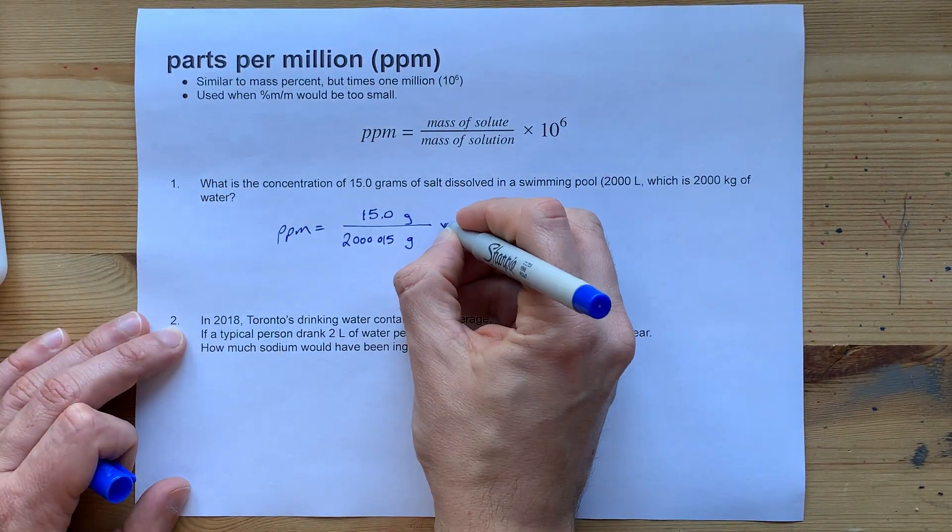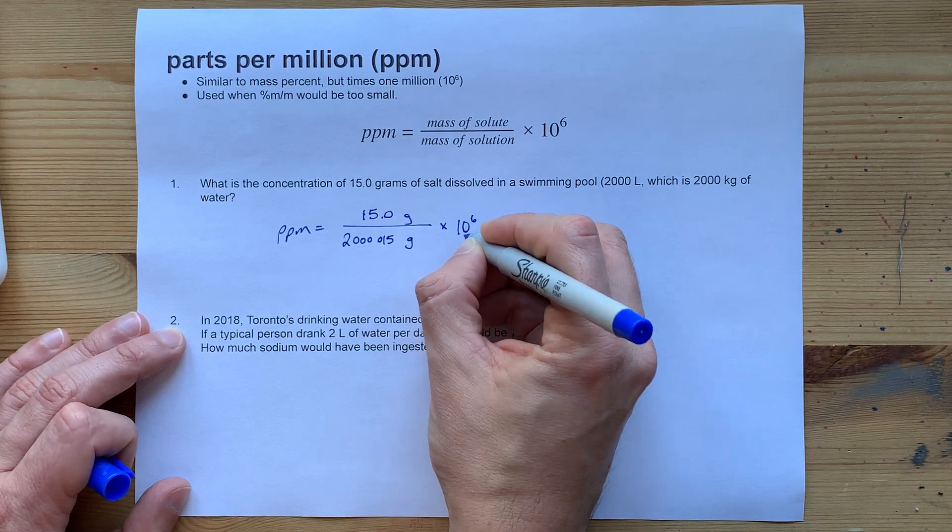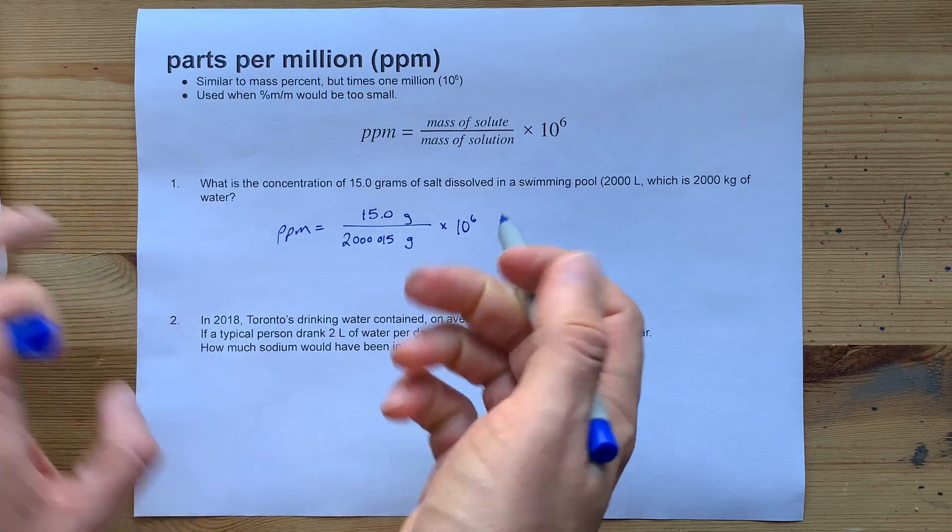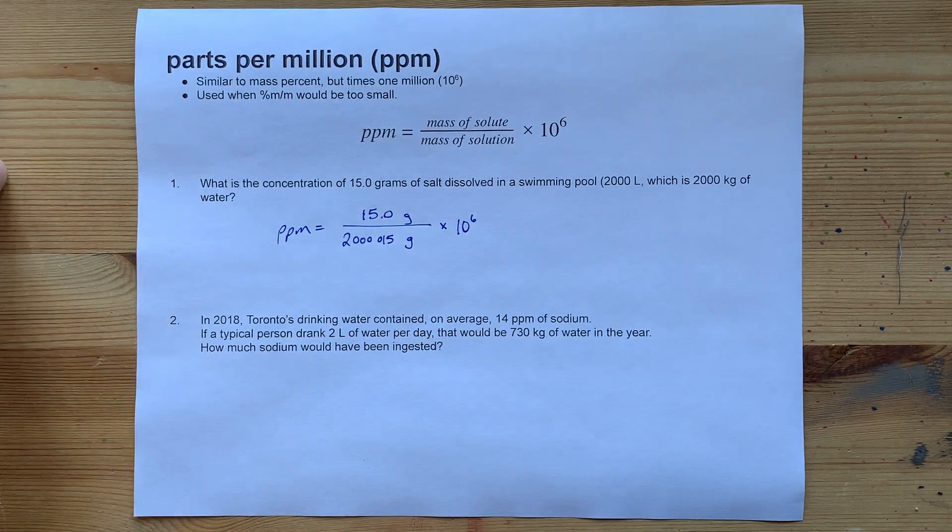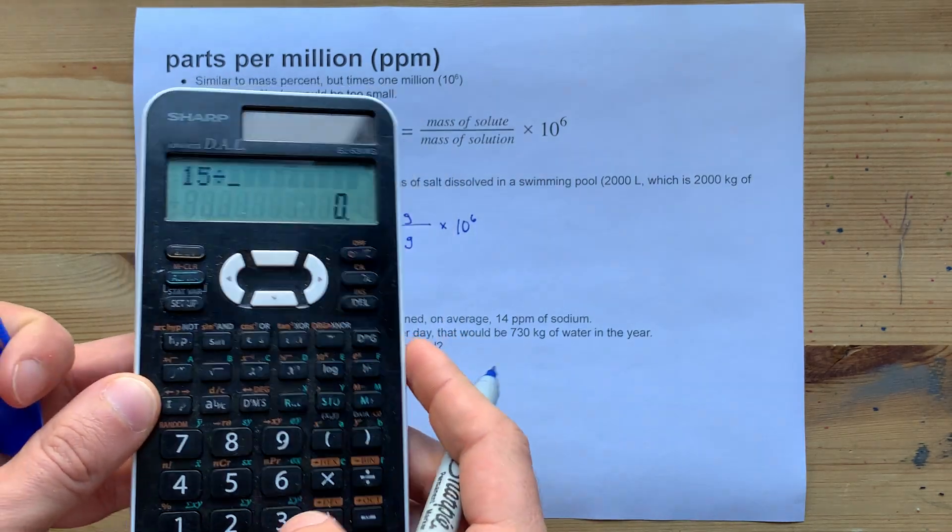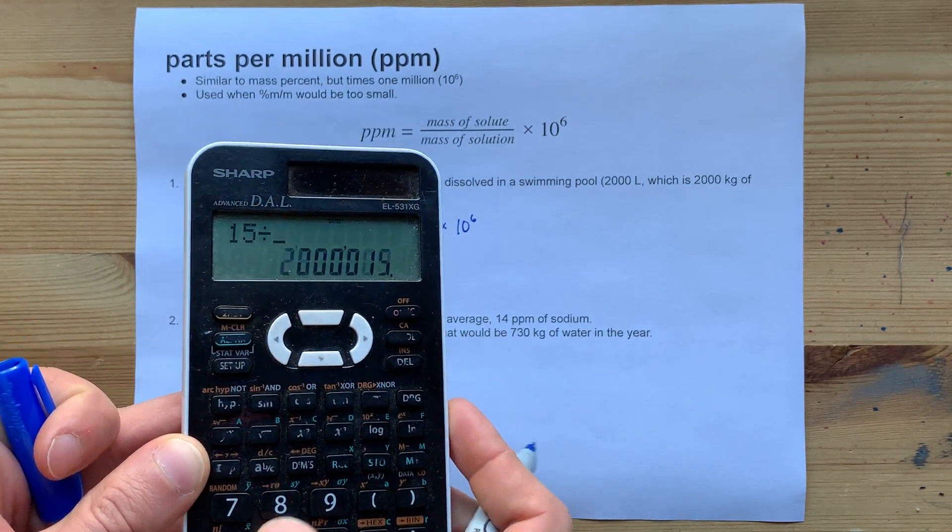Now, don't forget, you have to multiply by an actual million. That is a 1 with 6 zeros at the end, or 1 times 10 to the power of 6, if you're into scientific notation.